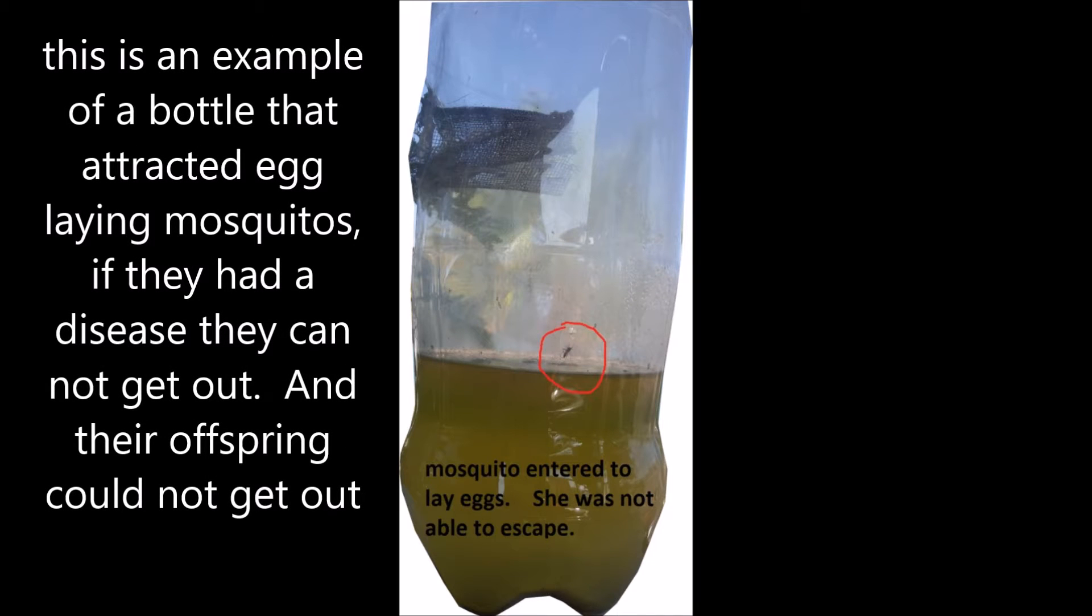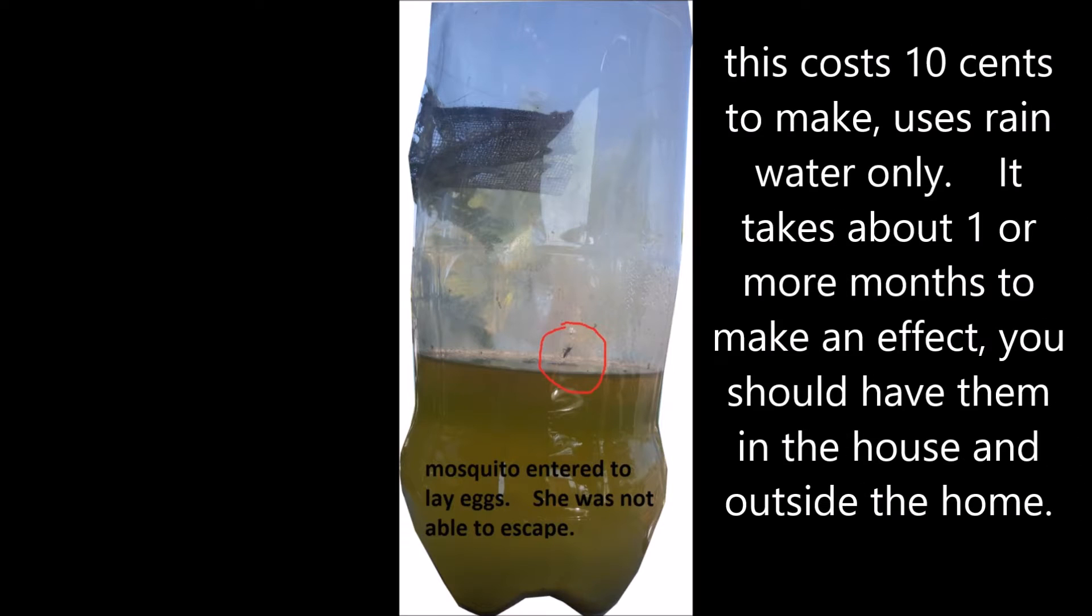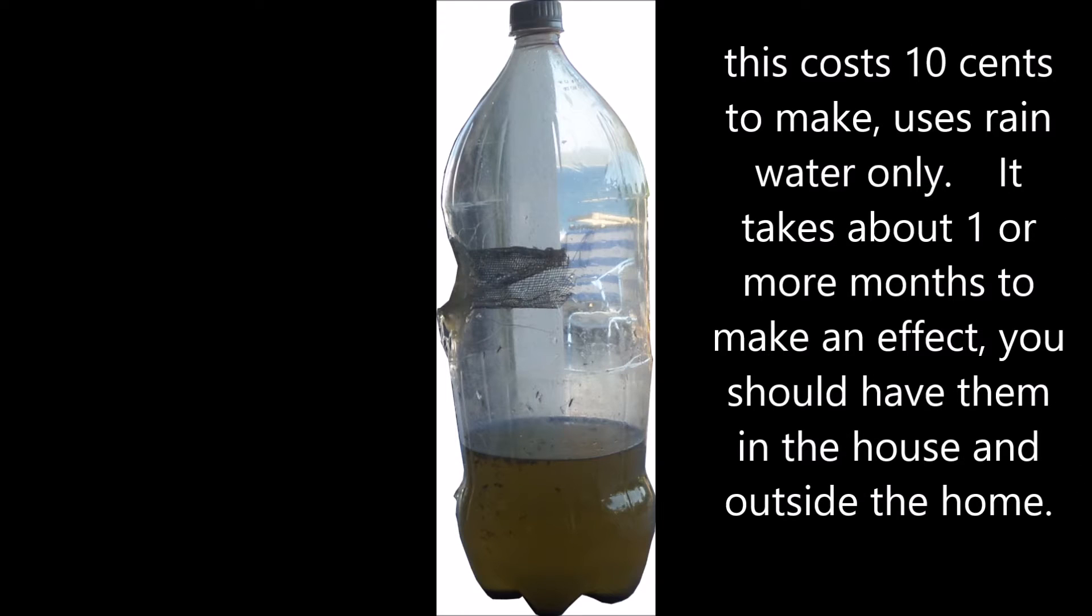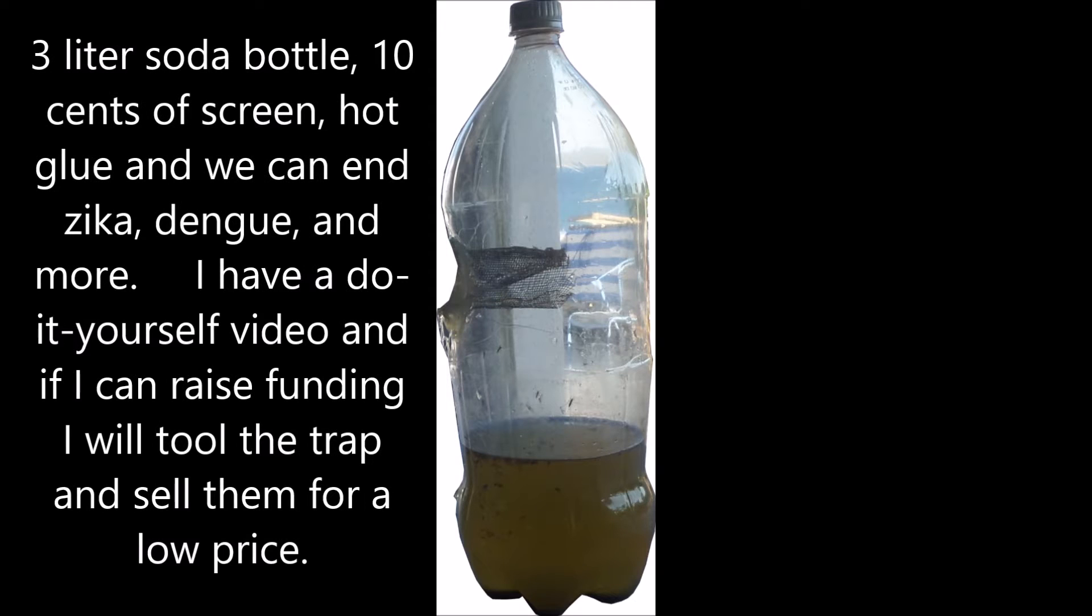This is a new trap. This is a one-way trap for mosquitoes. This trap can be made with simply a 10-cent screen, a Coke bottle, and some hot glue.